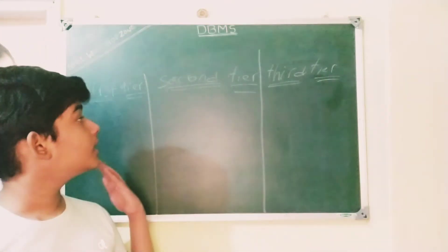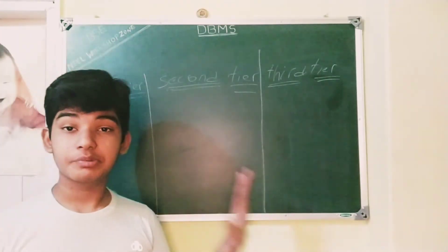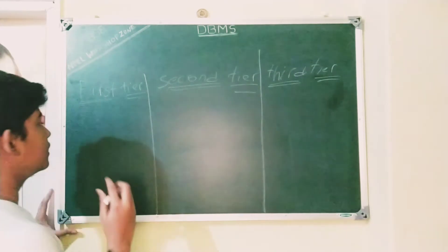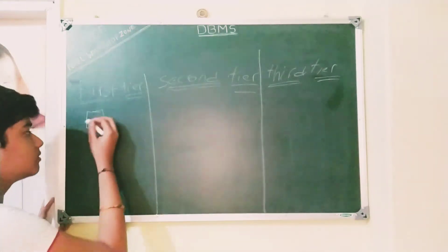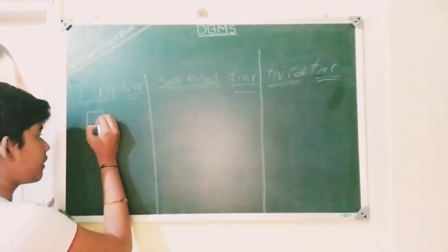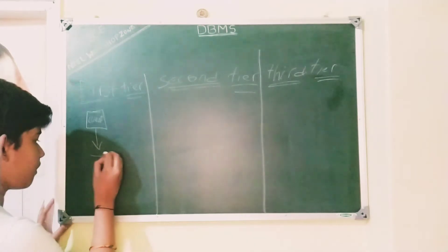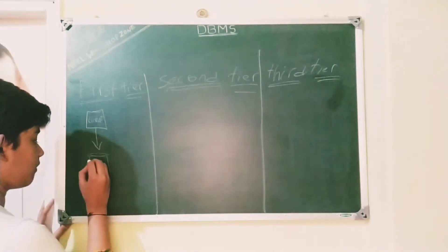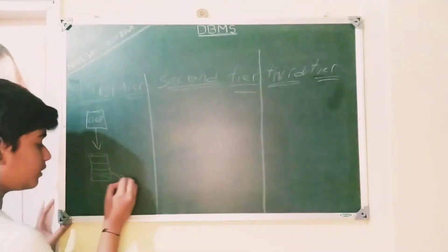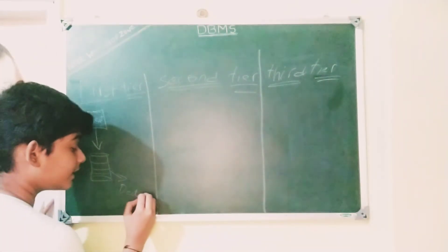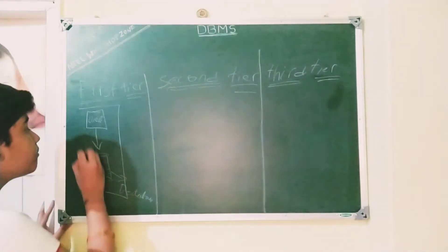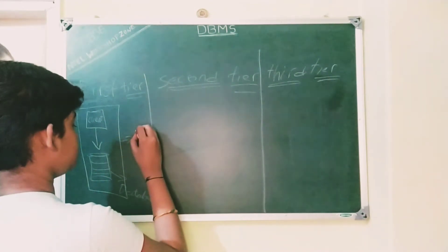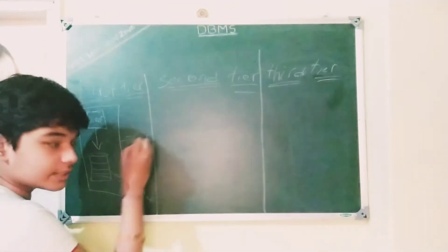So there are three types of architecture in the database management system. The first type involves a client — which is the user — asking for data from the database which is in a single computer. Let me give you an example to make it clearer.